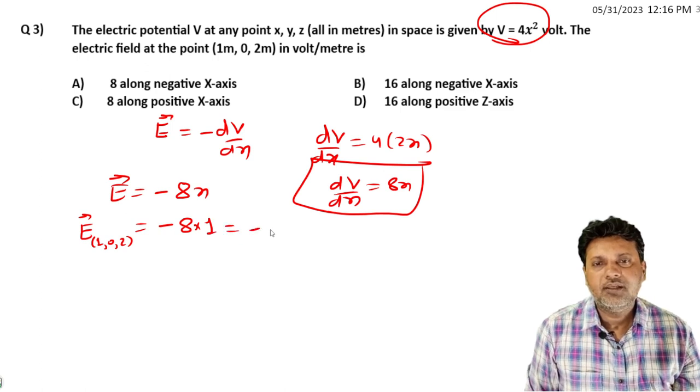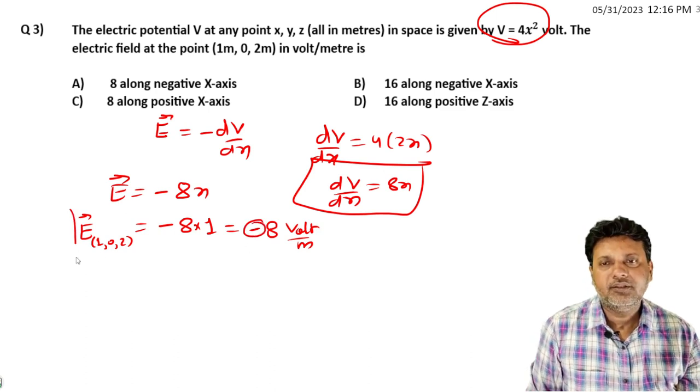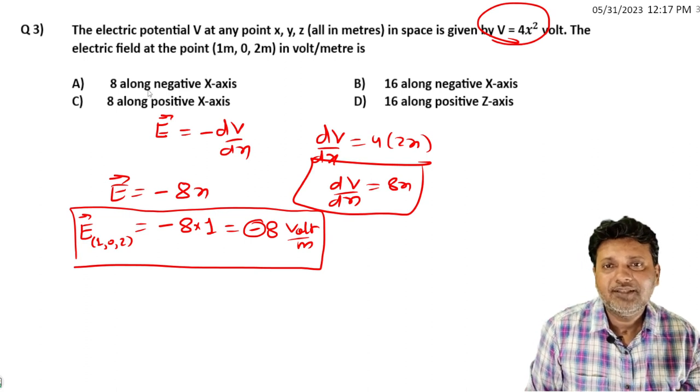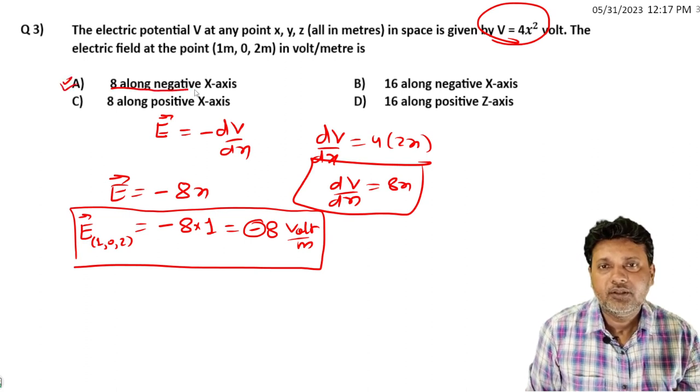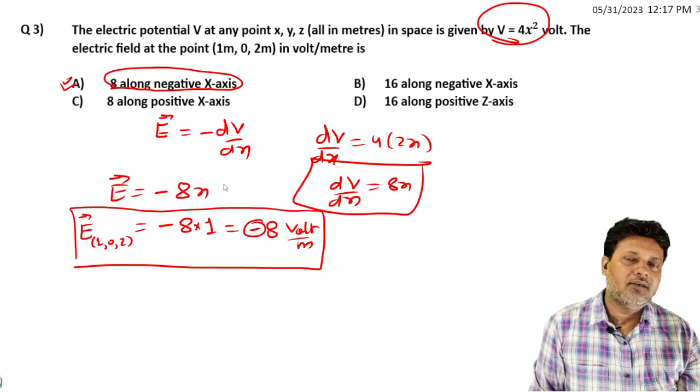So it is minus 8 volt per meter. The negative sign kya batara, electric field ki direction negative X direction mein. Negative X direction, the unit vector in negative X direction, correct.